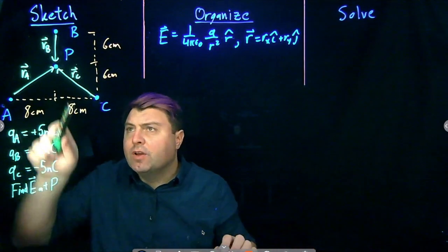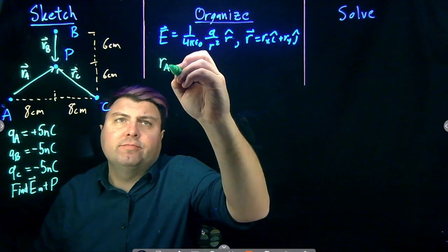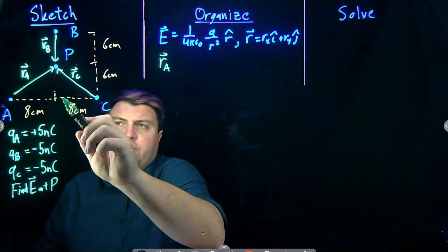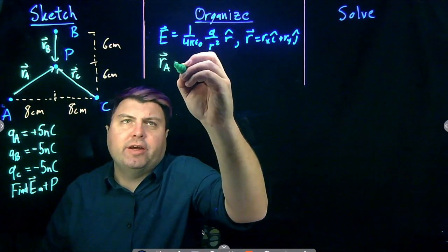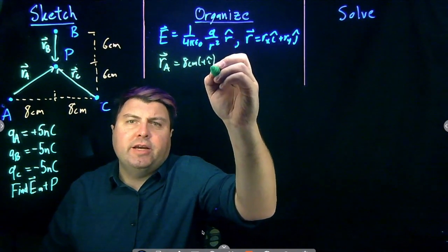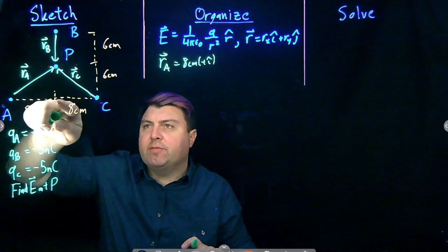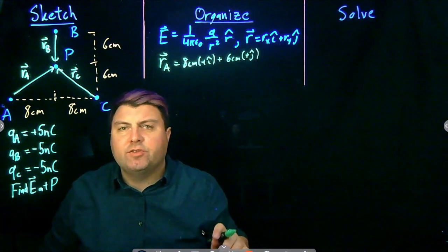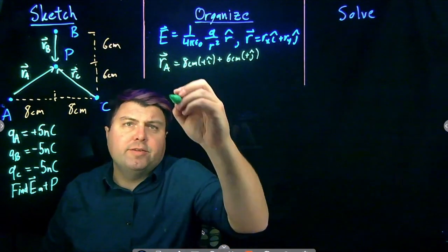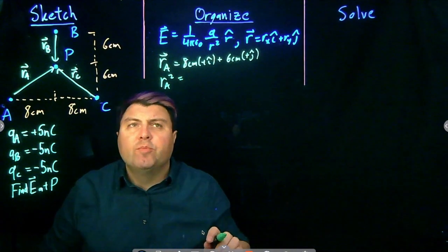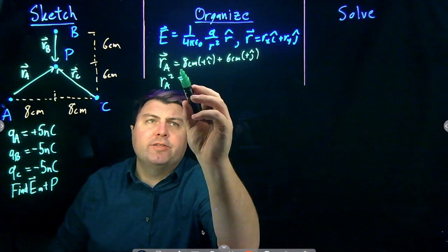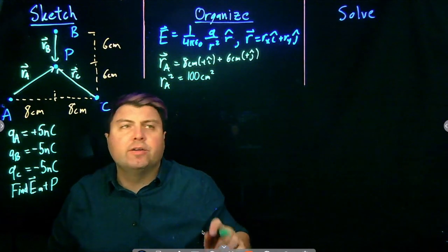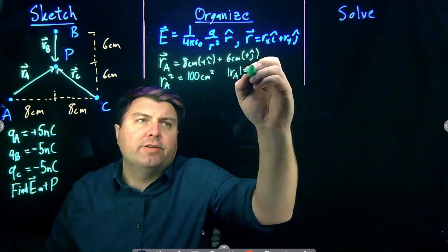Let's work through this for charge A. For R_A, I need to find the X direction: I go a total of 8 centimeters in the positive direction, so 8 cm î. Then I go 6 centimeters up, so plus 6 cm ĵ. I can then find R_A squared: 8 squared plus 6 squared equals 64 plus 36, which gives me 100 centimeters squared.